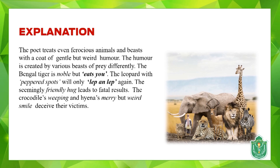The crocodile is weeping while eating its victim, but it's actually not weeping — it's eating up the victim. The hyena has a merry but weird smile; it looks like it's smiling, but that is a deception — they deceive their victims, attack them, and eat them up. These are different instances where the poet has created gentle but weird humor by explaining how these wild animals attack and eat their prey.